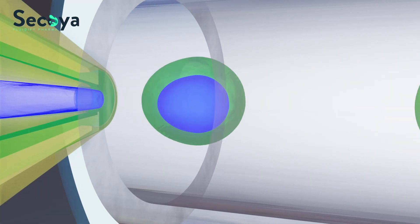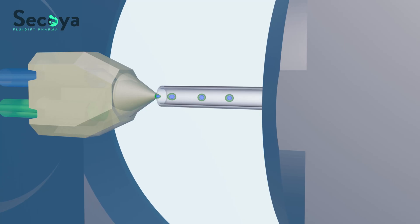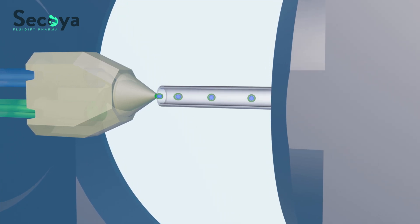Thanks to the design of the nozzle, the core phase is injected into the shell phase to produce the double emulsion in one step.